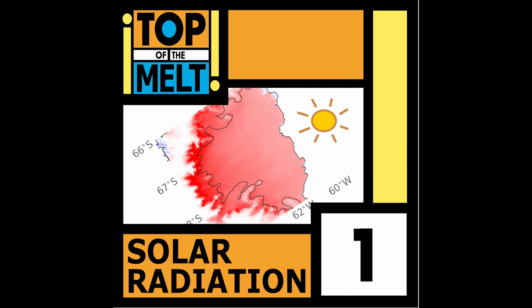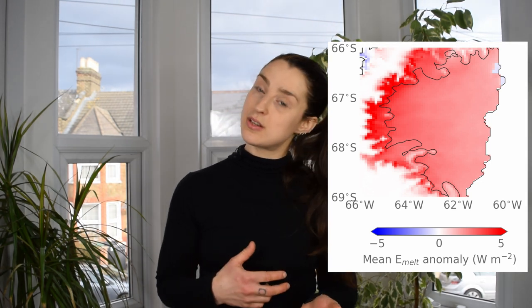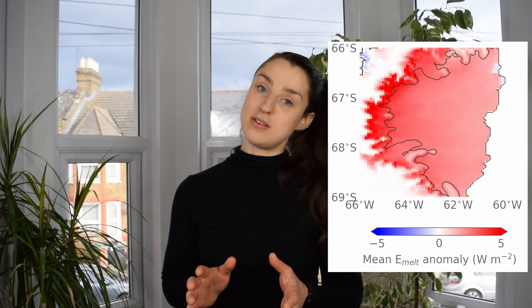Let's start at number one — it's solar radiation. In summer, we have 24-hour daylight over Larsen C, which means you can be stumbling around at 3 a.m. in glorious technicolor. In sunny conditions, we get more surface melting than average. That is what you're seeing here in this plot, where red colors show that there is more melt than average during sunny conditions.